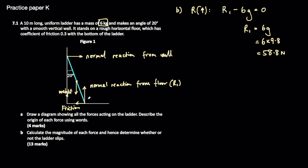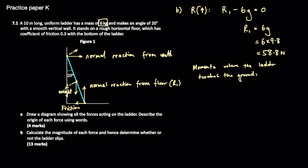We have two other forces to figure out: friction and the normal reaction from the wall. For the normal reaction from the wall, we can use moments around the point where the ladder touches the ground — that way we'll only have one variable. To find the moments about this point we'll use the perpendicular component of the weight with the ladder and the perpendicular component of the normal force from the wall, giving an equation with just one unknown.